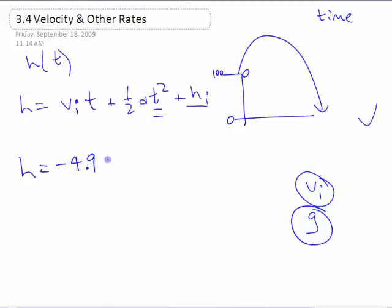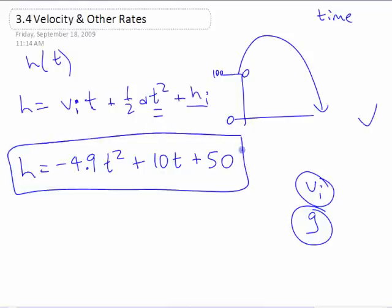So this is usually negative 4.9 if we're doing it in metric, t squared. Plus, if we launched it at 10 meters per second upwards, 10t. Let's say we launched it from a height of 50 meters. I have to change my diagram. I just wanted something different than that. If you're launching it from that height with a vertical velocity of 10, this would be the equation.